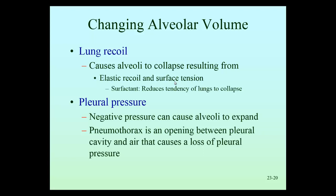Another factor influencing lung size is the pleural pressure. The pleural cavity is the fluid space between the parietal and visceral pleura, and that negative pressure allows those alveoli to expand. If we reduce that pressure — for example, if there's a puncture in the lung from a broken rib, auto accident, gunshot wound, or stabbing — that can cause pneumothorax, causing the negative pressure in the pleural space to equalize with outside air. As a result, the lungs will collapse.